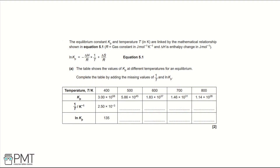The equilibrium constant Kp and temperature T in Kelvin are linked by the mathematical relationship shown in equation 5.1. R is the gas constant in joules per mole per Kelvin and delta H is the enthalpy change in joules per mole.